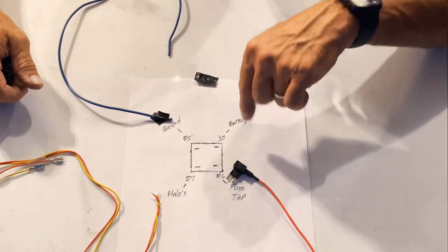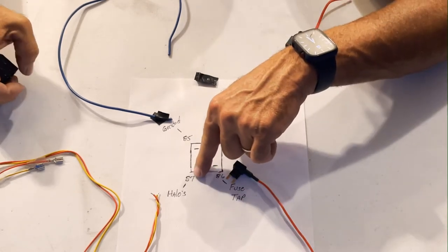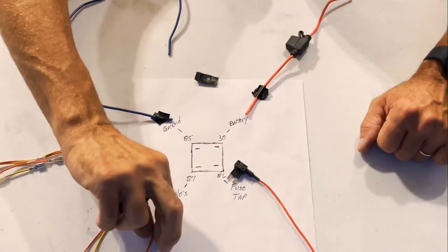Once this switch is closed, or I should say open, it allows the 12 volts to go through the pin 87 and that's where you hook up your halos.